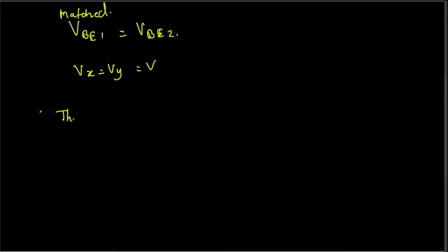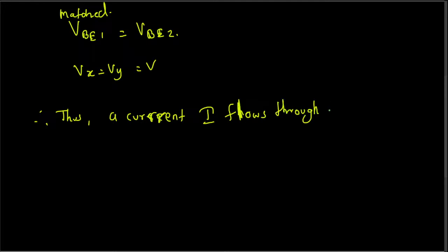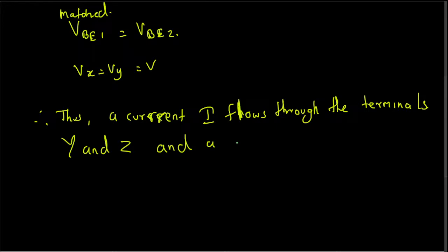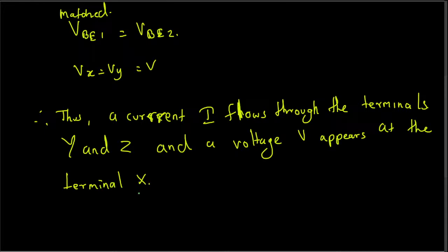Therefore we can finally conclude: a current i flows through terminals Y and Z, and voltage v appears at terminal X. That's it for this video. I hope you found it helpful. Thanks for watching — don't forget to subscribe to my channel. See you in the next video.